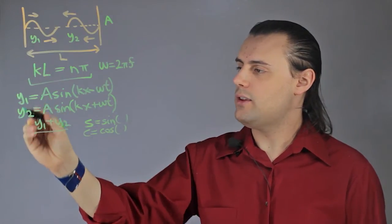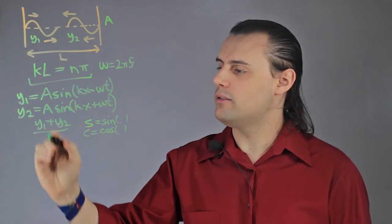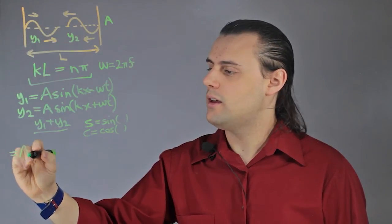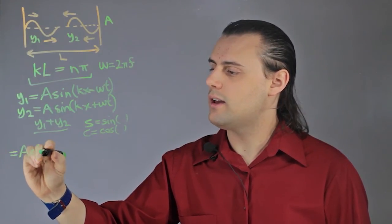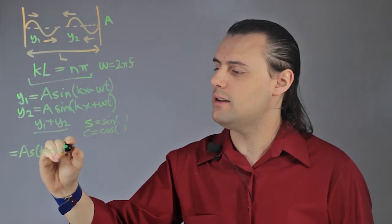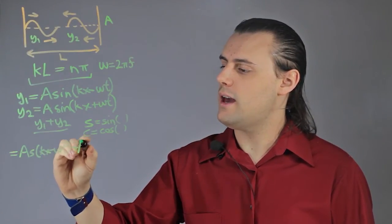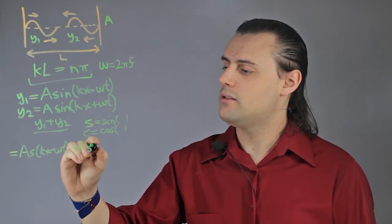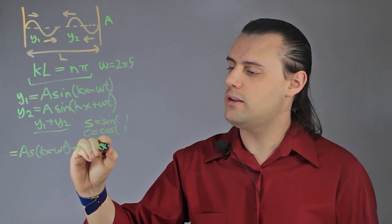So when I add these two, I have y₁ plus y₂, which is going to be equal to A sin(kx - ωt) plus A sin(kx + ωt).